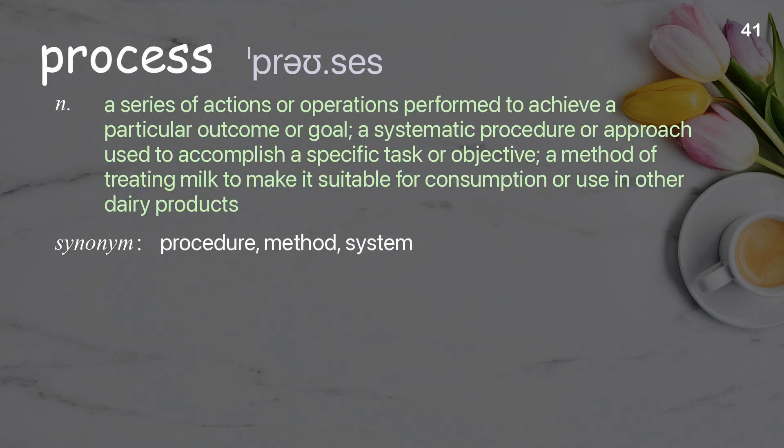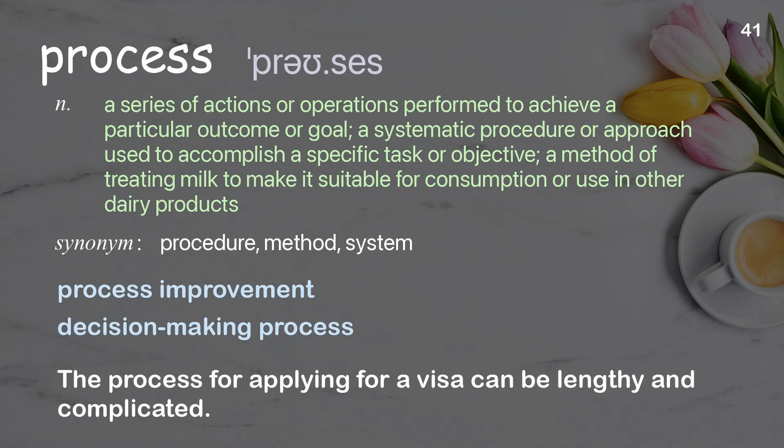Process: A series of actions or operations performed to achieve a particular outcome or goal; a systematic procedure or approach used to accomplish a specific task or objective. Examples: The process for applying for a visa can be lengthy and complicated.